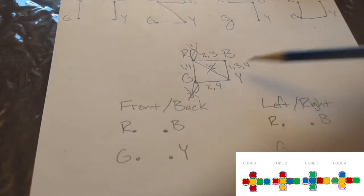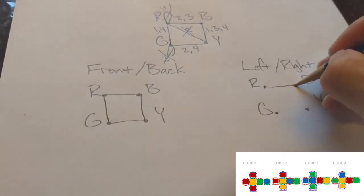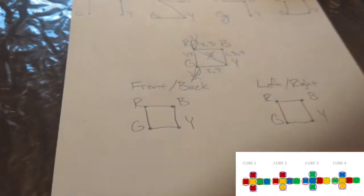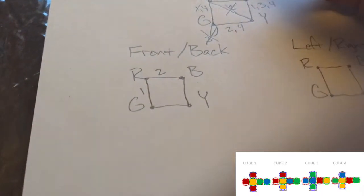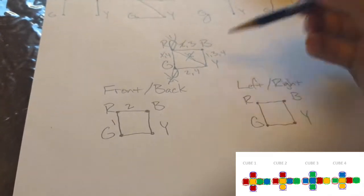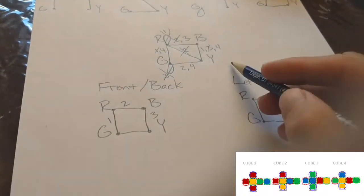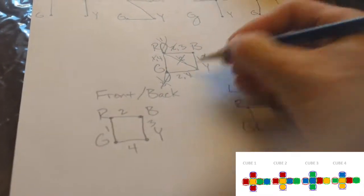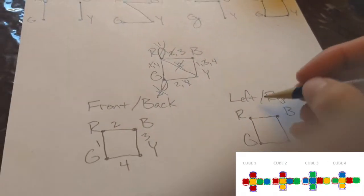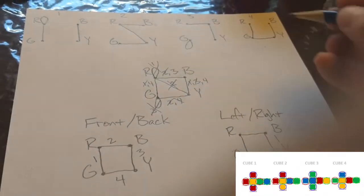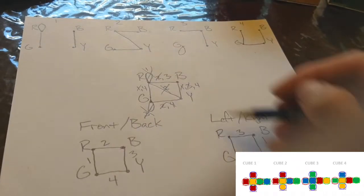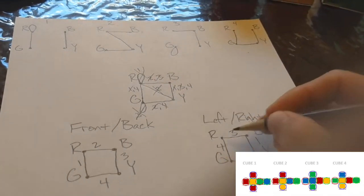On both boxes we're going to use these combinations. We need to find a combination that works between the two. For front-to-back: red to green I'll use block one, red to blue I'll use block two, blue to yellow I'll use block three, and green to yellow I'll use block four. For left-to-right: blue to yellow I'll use block one, green to yellow block two, red to blue block three, and red to green block four.